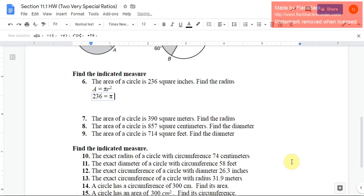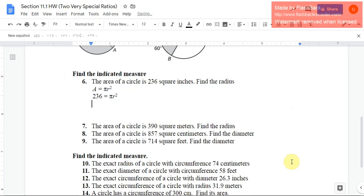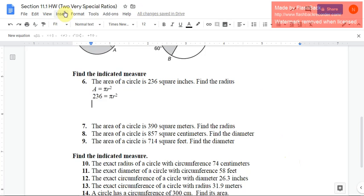to pi times the radius squared. Right, hit enter. Now I want to show that I'm dividing both sides by pi, so we can type Insert